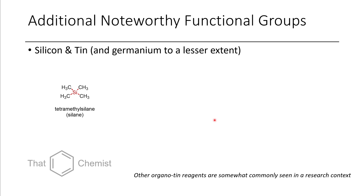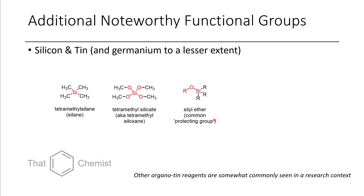Some functional groups: if we have a silicon connected directly to a carbon, we call that a silane — in this case, tetramethylsilane. If instead the silicon is connected to oxygen, we call that a siloxane — tetramethylsiloxane, also okay to call tetramethylsilicate. If an alcohol's OH has been exchanged for an O-Si, we call that a silyl ether, commonly seen as protecting groups. When it comes to tin, the most commonly encountered species is tributyltin hydride, a common radical scavenger combined with a radical activator. Even though tin is a metal, it acts more like a metalloid. We tend to avoid these due to the toxicity of tin-based reagents.